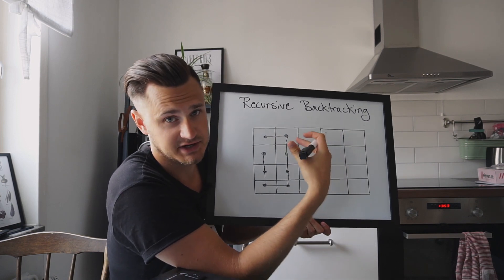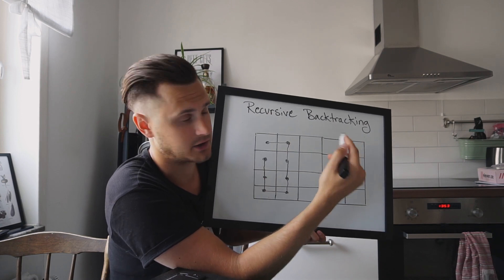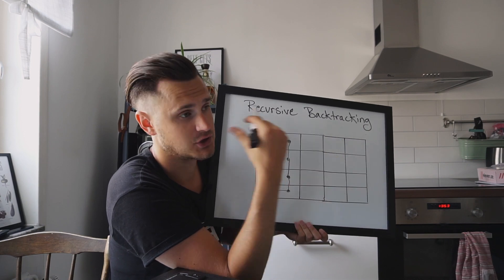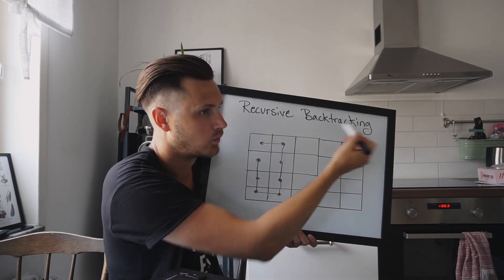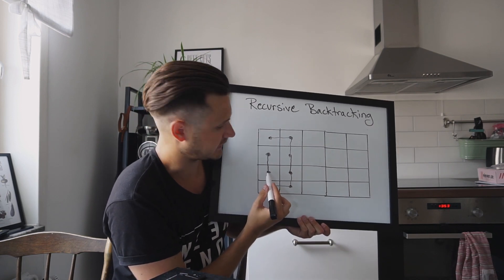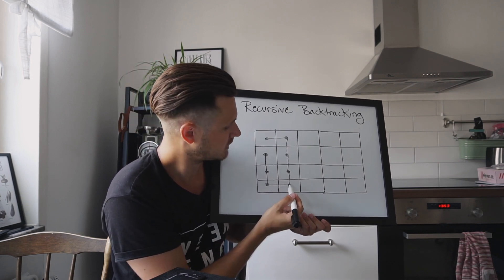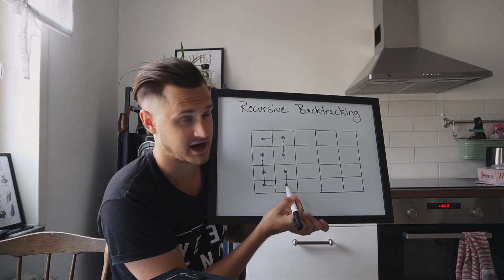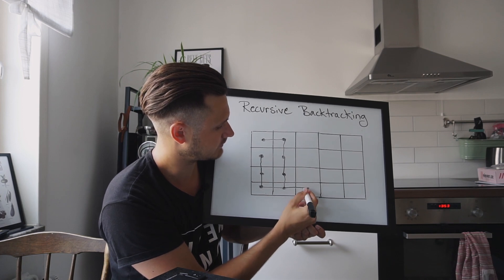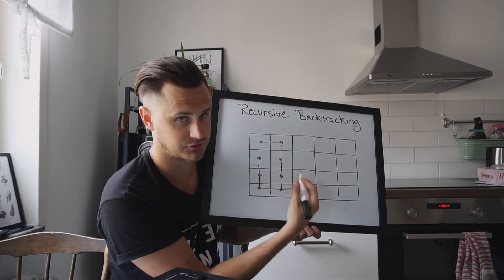And this is where it starts to get interesting. We've ended up on this cell and we can't go anywhere from here — the cell does not have any unvisited neighbors. So what we'll have to do is backtrack, hence the name. So we'll move back to this cell. Can we move anywhere from here? No. We go back to this cell — can we move from here? No. We come back to this cell, and from here we have one unvisited neighbor, so we have to go here. And now we were kind of stuck in here and now we're free again.